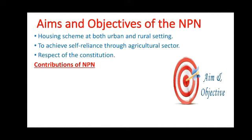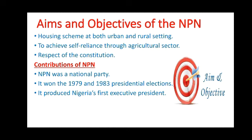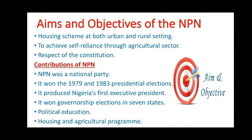Among the various contributions of NPN: the NPN was a national party; the party won the 1979 and 1983 presidential elections; the party produced Nigeria's first executive president in the person of Alhaji Shehu Shagari; it won governorship elections in seven different states; the party promoted political education; and it provided housing and agricultural programs for Nigerians.